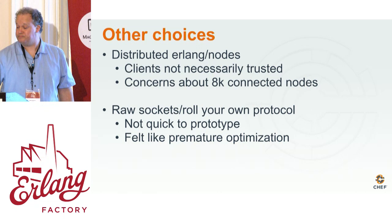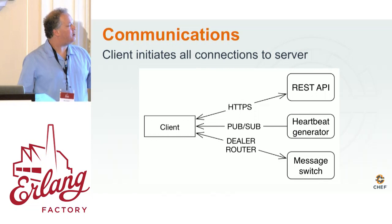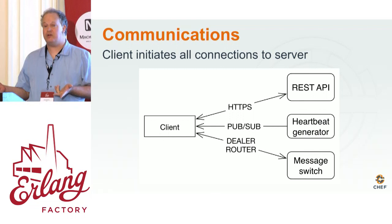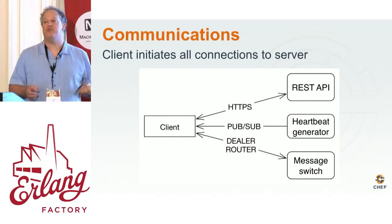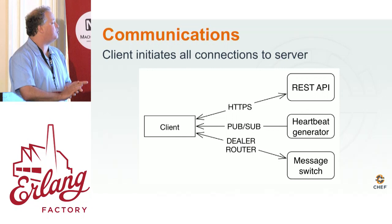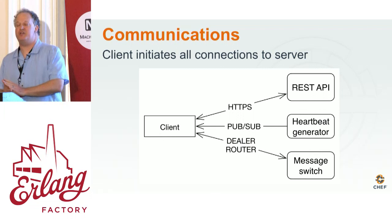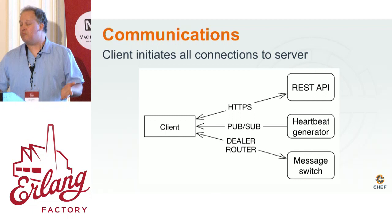The communications model: things on the right-hand side are on the server, left-hand side is the client. The client does three basic kinds of communications. It gets configuration information over HTTP from a REST endpoint — the client only needs a key and a URI to get started; everything else like ports, heartbeat rates, and network topology comes from the server. We listen to heartbeats from the server over a pub-sub socket pair. Everything else — client-to-server heartbeats and command-and-control messages — goes over a dealer-router to a message switch in the server.